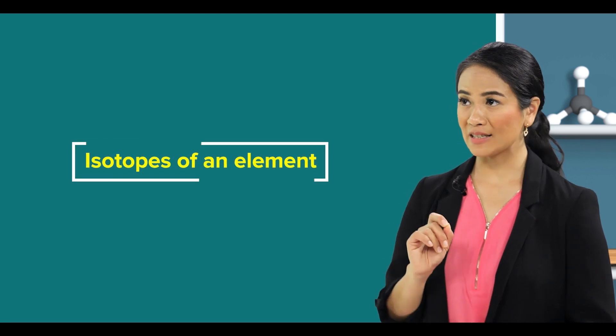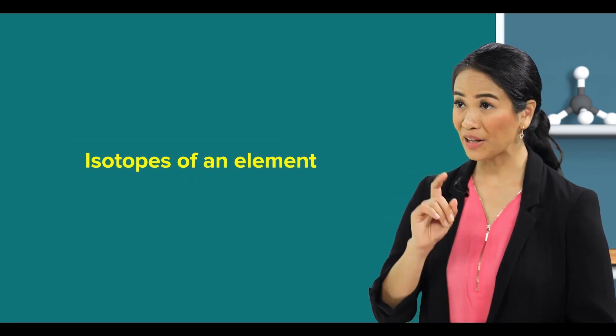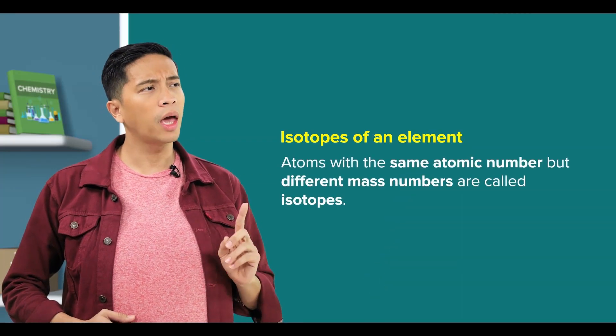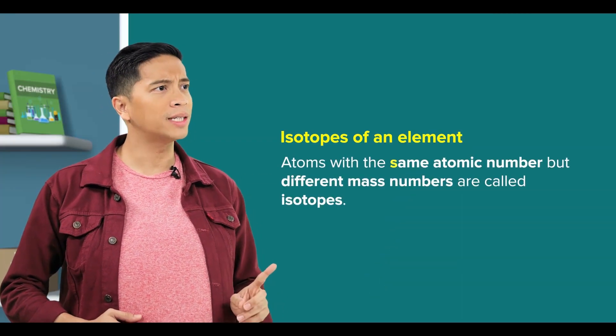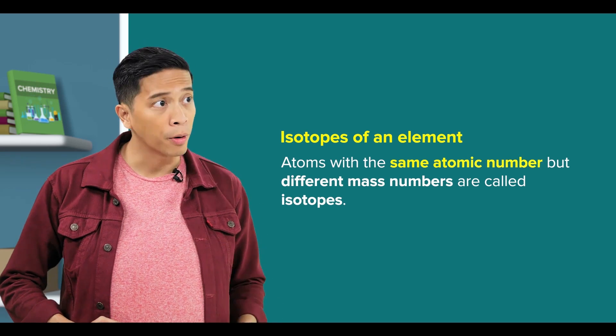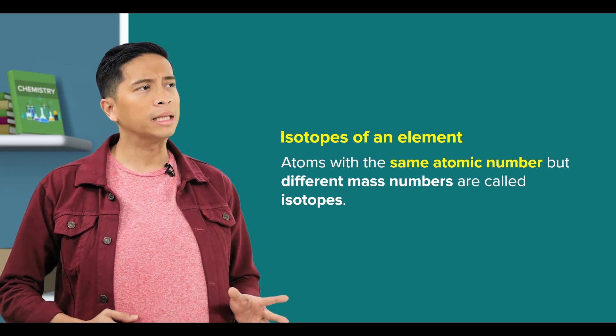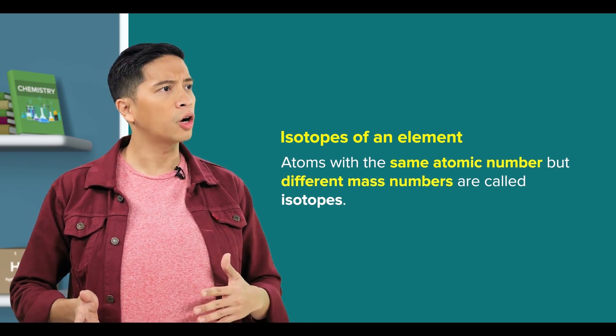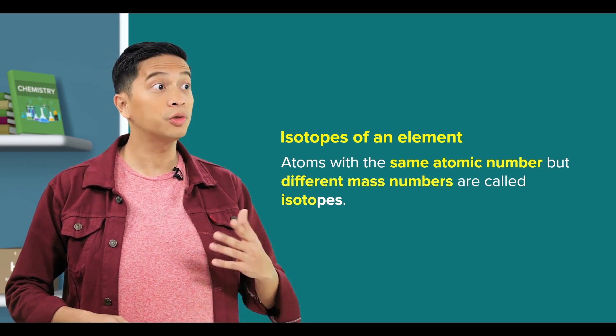That's right, and we call them isotopes of an element. Atoms with the same atomic number but different mass numbers are called isotopes.